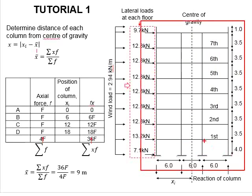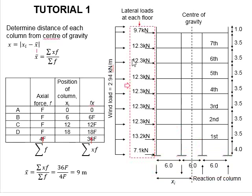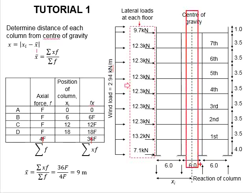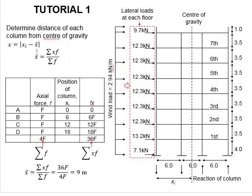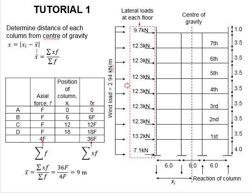Based on the frame structure, the span is symmetrical, so the center of gravity will be at the middle of the frame, which is 9 meters from the side of the structure. In the case that the beam spans are not symmetrical — say 4 meters, 5 meters, and 6 meters — you need to determine the position of the center of gravity using the formula sigma(xf) divided by sigma(f). Assuming the axial force in each column equals f, and there are 4 columns A, B, C, and D, the summation of axial forces of all four columns equals 4f, which is sigma(f).